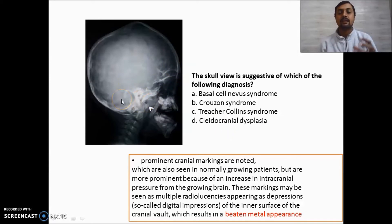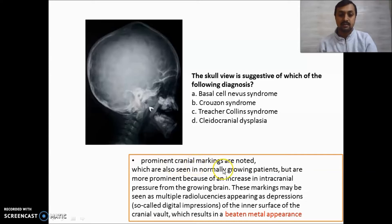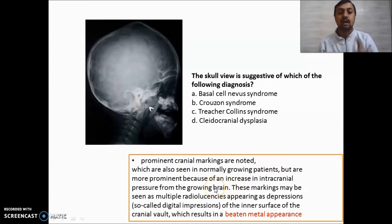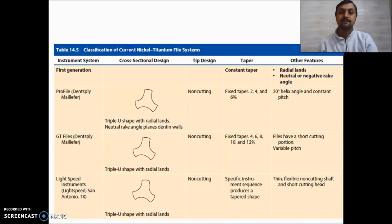In this skull view, you can see two important features: prominent cranial markings and a beaten metal or copper-beaten appearance. This indicates Crouzon syndrome. Prominent cranial markings are noted, which are also seen in normal growing patients but are more pronounced due to increased intracranial pressure from the growing brain. These markings appear as multiple small radiolucencies — depressions on the inner surface of the cranial wall — resulting in the copper-beaten appearance. This is Crouzon syndrome with two definitive diagnostic features.